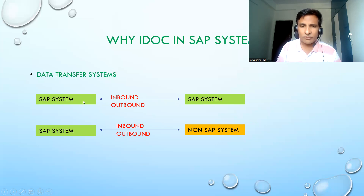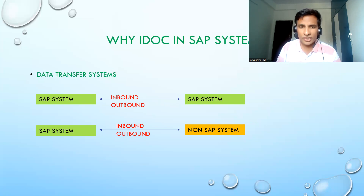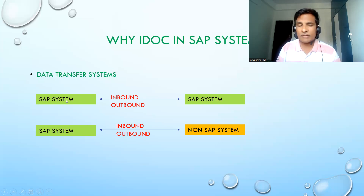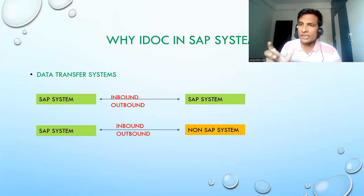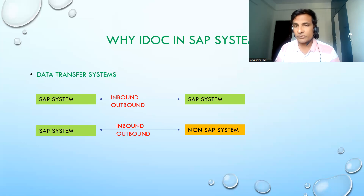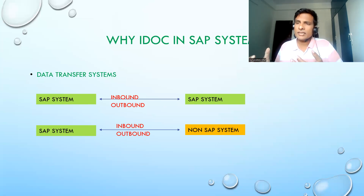For example, you are sending material master data — quantities, prices, and related information — from the source system to the target system. From the target system you may seek information like order confirmation, available materials, quantities, units of measure, product hierarchy levels, and prices. In all these cases you can use IDOC.